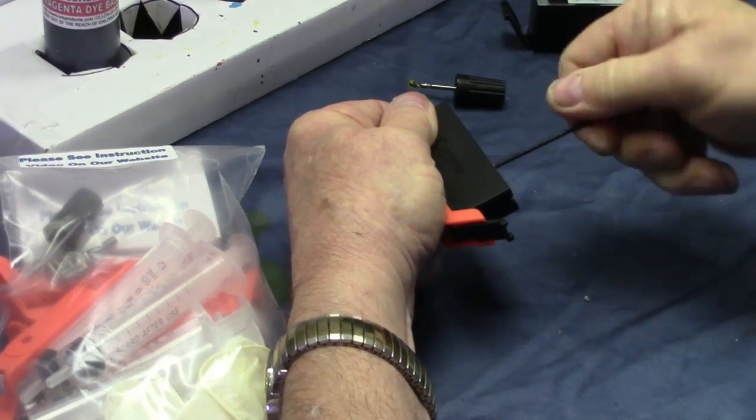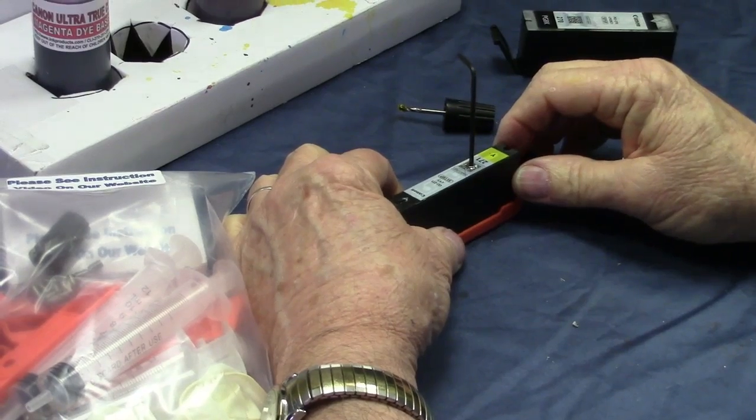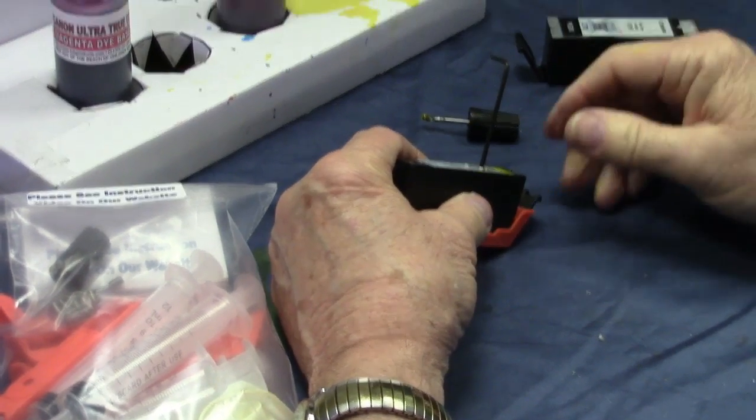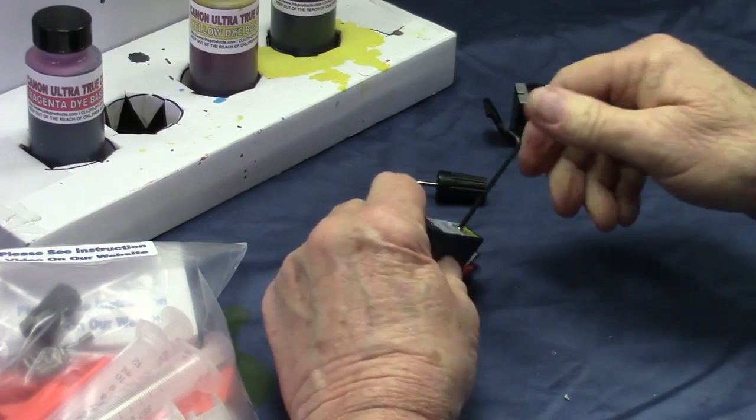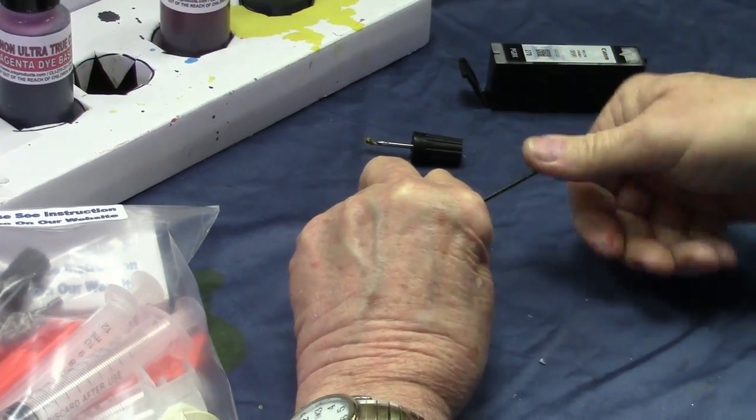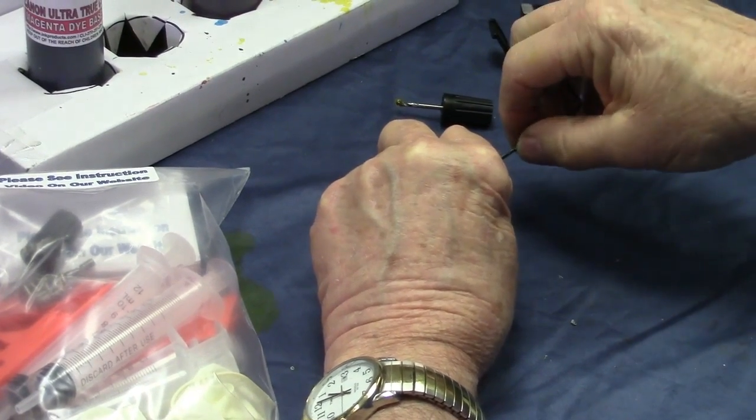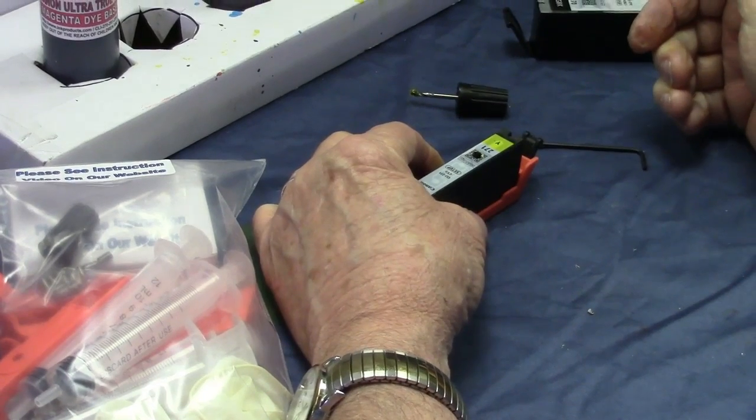Now the chip resetter will do 20 sets of cartridges. That's a lot of cartridges. Usually by that time the cartridge itself is worn out, so it's time to get a new chip resetter and a new set of Canon cartridges.